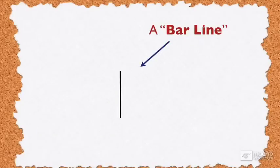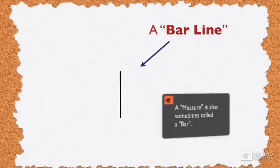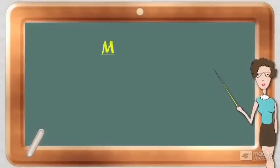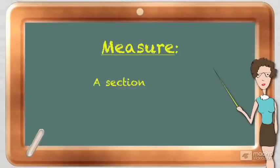Now, not to confuse you, but the measure itself can also be called a bar. So we have measures or bars and the bar lines which divide them. We can define a measure as a section on the staff that comes between two bar lines.